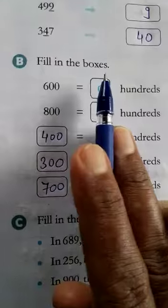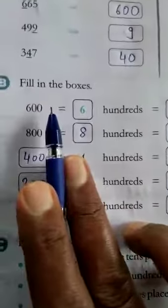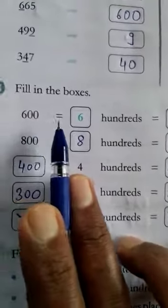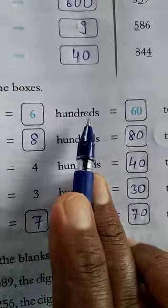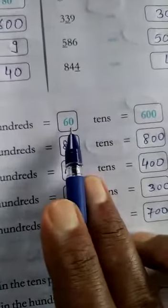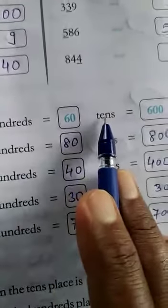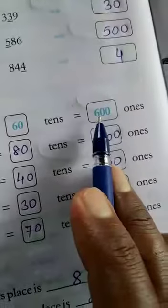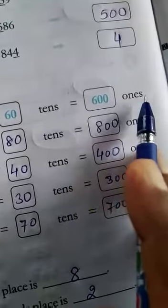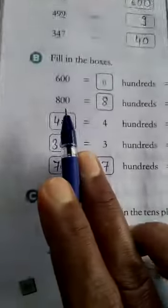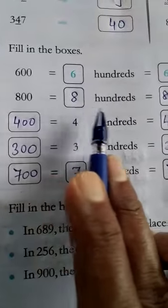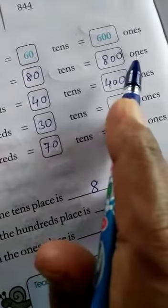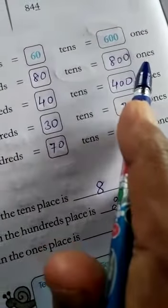Question number B: Fill in the blanks. 600 can be written as 6 hundreds, or 60 tens, or 600 ones. In the same way, 800 can be written as 8 hundreds, or 80 tens, or 800 ones.